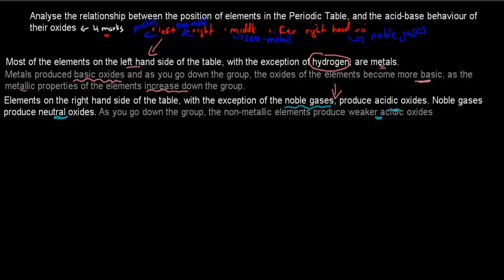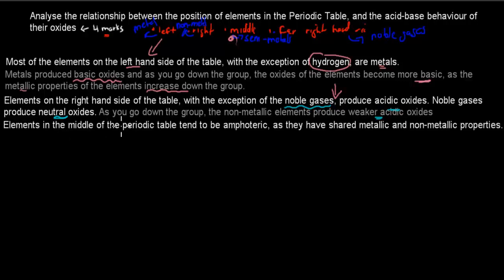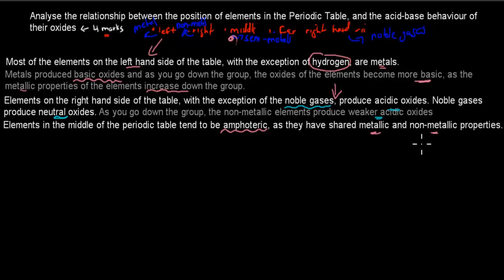Now we have the semi-metals — the middle part. Elements in the middle of the periodic table tend to be amphoteric; that is the word you should remember. That means they act both as a base and as an acid, because they have shared metallic and non-metallic properties.